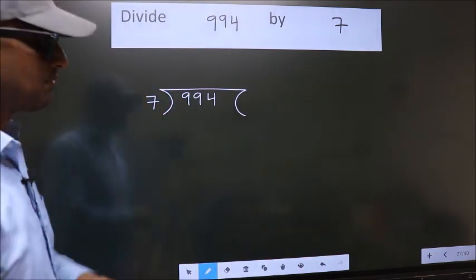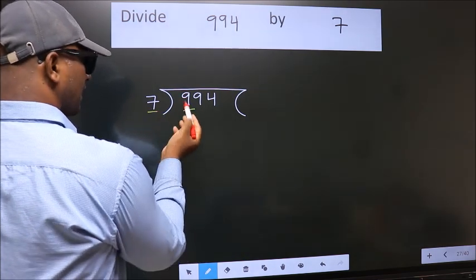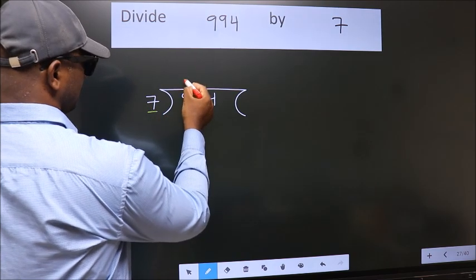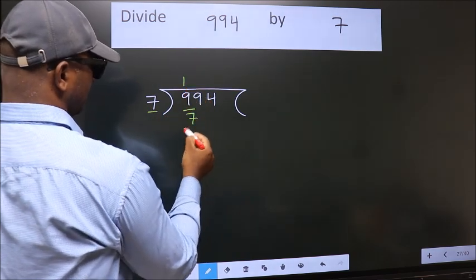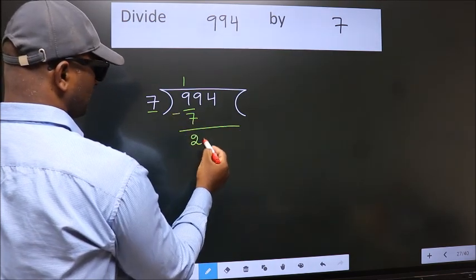Next. Here we have 9, here 7. A number close to 9 in 7 table is 7 once 7. Now we should subtract, we get 2.